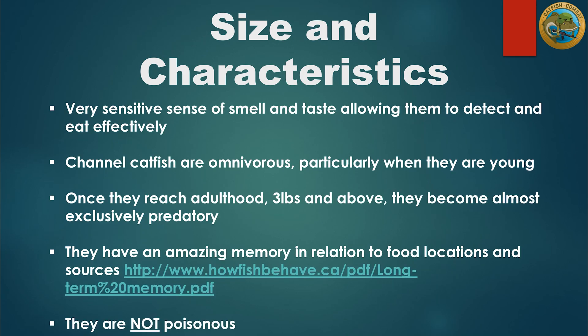Channel catfish have an incredible sense of smell and they can smell minute amounts of blood or fish scents in the water from some impressive distances. This is also a trait for all three catfish species as well. Channel catfish are omnivorous, eating both bait fish or prey and aquatic vegetation, particularly when they are young. Once channel catfish reach adulthood, however, they become almost exclusively predatory and carnivorous.